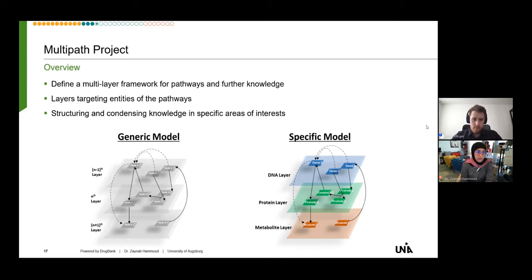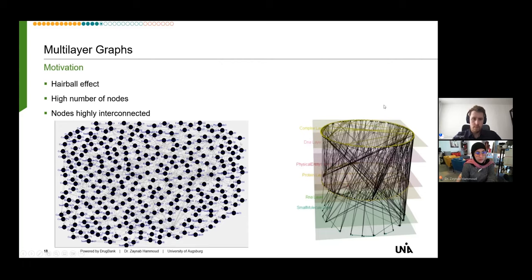The aim was to define a multi-layer framework for pathways by creating a genetic model — an N-layer model where each layer targets specific entities of the pathways. For example, for pathways we can separate entities based on their types: one layer for DNA, another for protein, and a third for metabolites. We went with multi-layer graphs because of the hairball effect — caused by a high number of highly connected nodes that produce an overwhelming overlap of edges when visualized. Separating the graph over many layers gives a better overview of each connection and node.